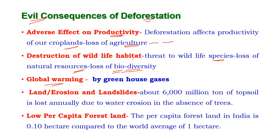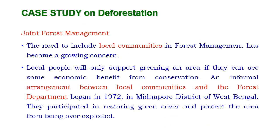Global warming: deforestation causes global warming by means of the projection of more greenhouse gases into the environment. Land erosion and landslides: about 6,000 million tons of topsoil, which is essential for agriculture, is lost annually due to water erosion in the absence of trees. The per capita forest land in India is now only 0.10 hectare, compared to the world average of one hectare.